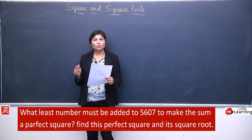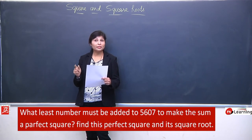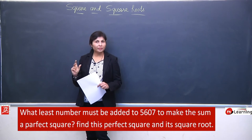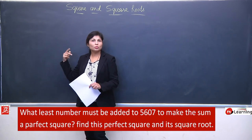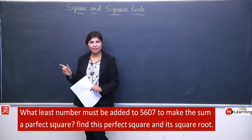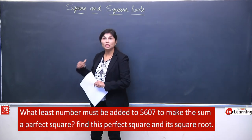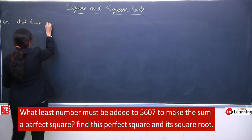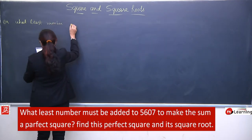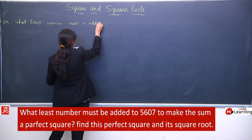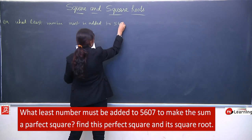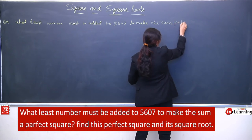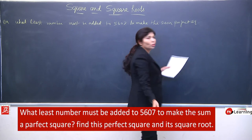But ab pattern totally change hai. What least number must be added to 25607 to make it a perfect square? Also find the square root. Long division method se solve karke nearest square root find karenge. Yahan hai 56 — aisa number choose karenge jo yahan bhi likhenge, yahan bhi. 7 × 7 = 49, subtract kar denge. 7 yahan par add kar denge — yeh step immediately karna hai.